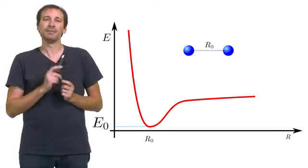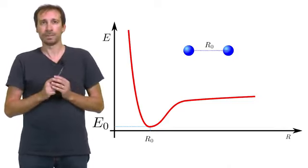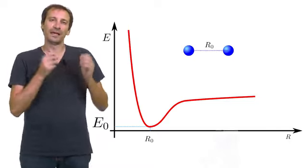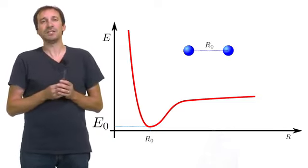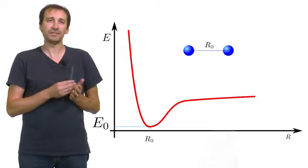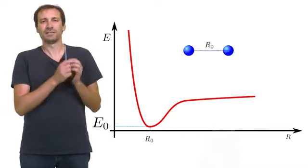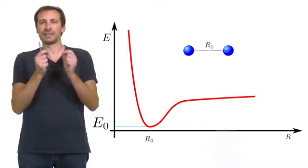A first example can be the equilibrium position of the atoms in a molecule. What is the equilibrium distance for these two atoms to form a diatomic molecule? This is a typical energy minimization problem that gives, via the evaluation of the total energy as a function of the distance r, the equilibrium position r0.